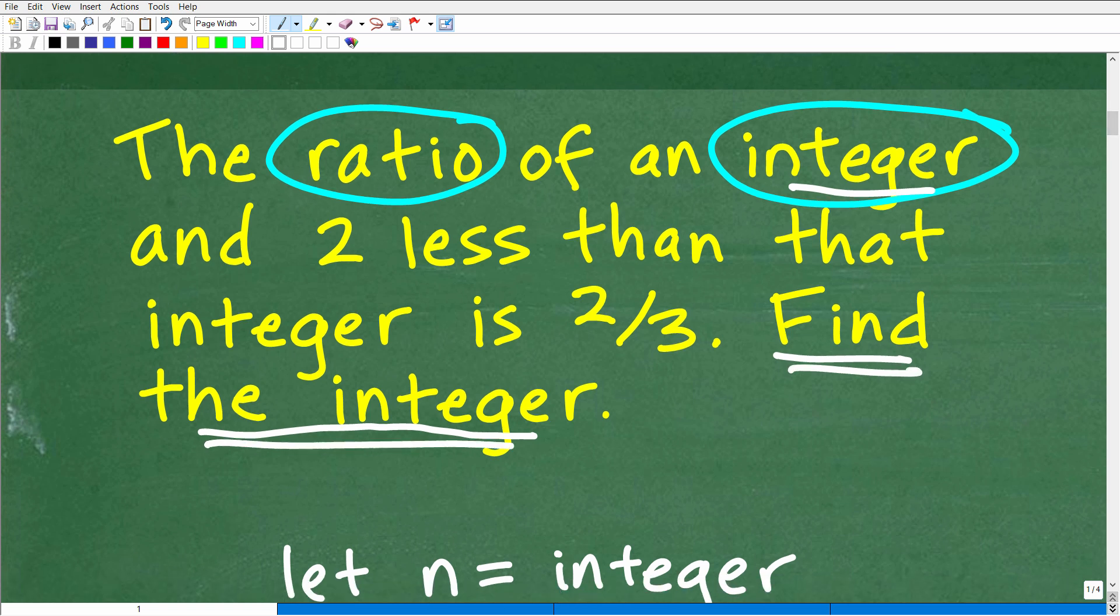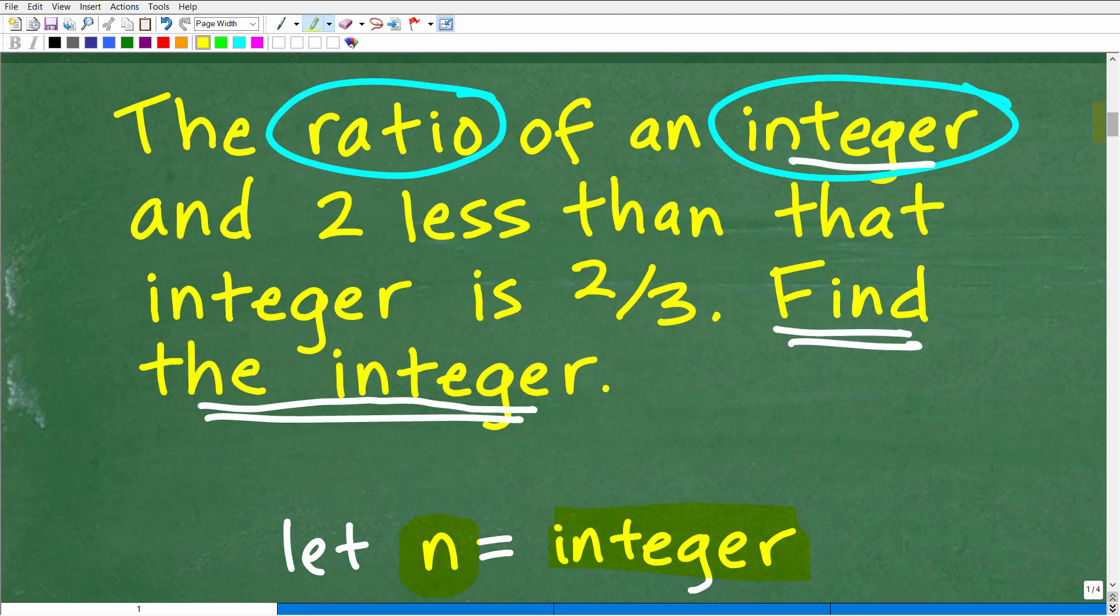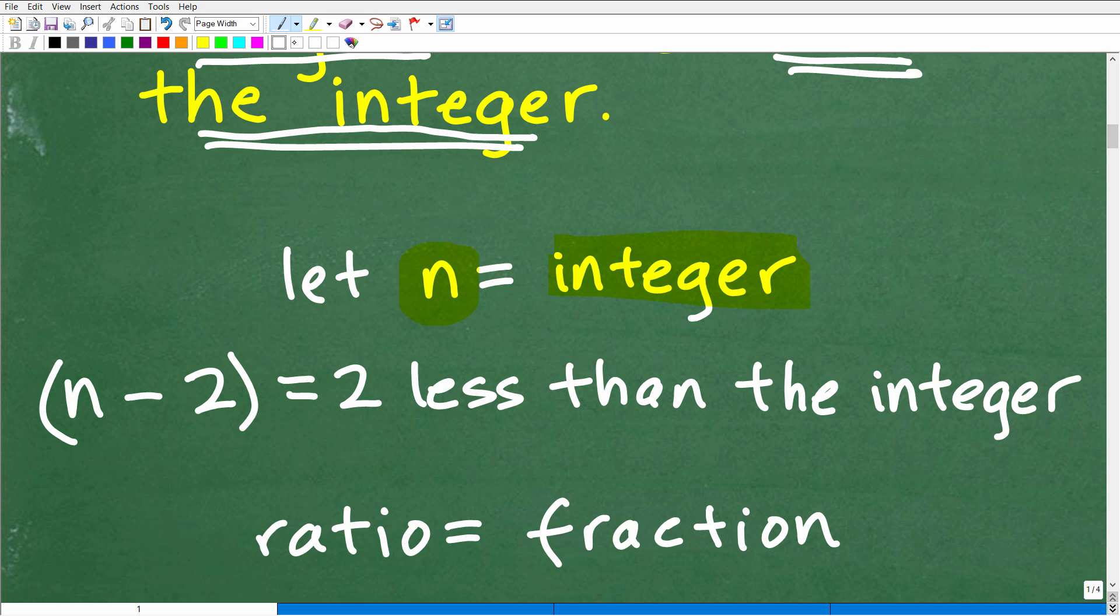All right, so we need to find this integer. So we're trying to find a number. Well, let's go ahead and use a variable to represent that number. So let's let n represent this integer. Now, this is another tricky part of this problem. So it says the ratio of an integer and two less than that integer. So two less than that integer. What does that mean? Well, I've got to be very careful here. This is two less, minus two. We're going to take away two from that integer. So here's the integer. If we take away two, this is two less than that integer.